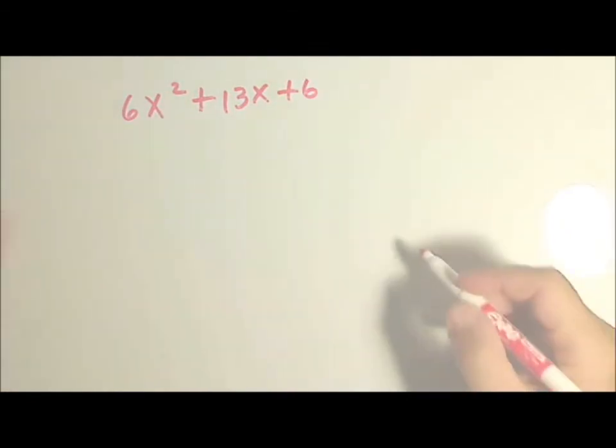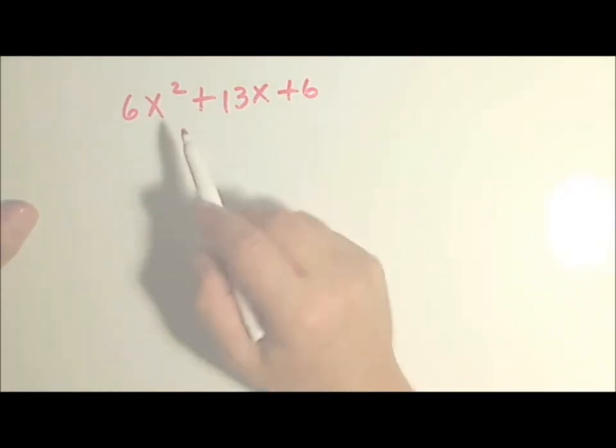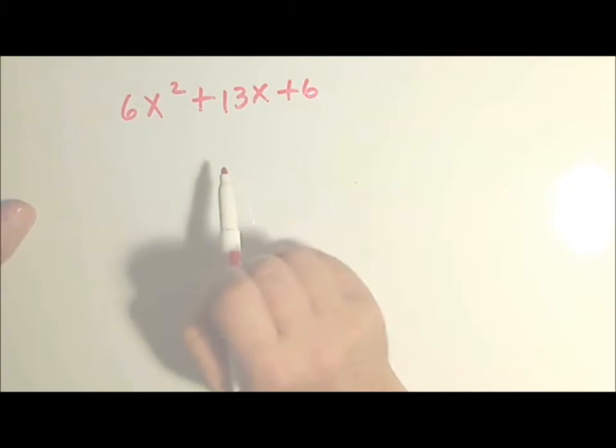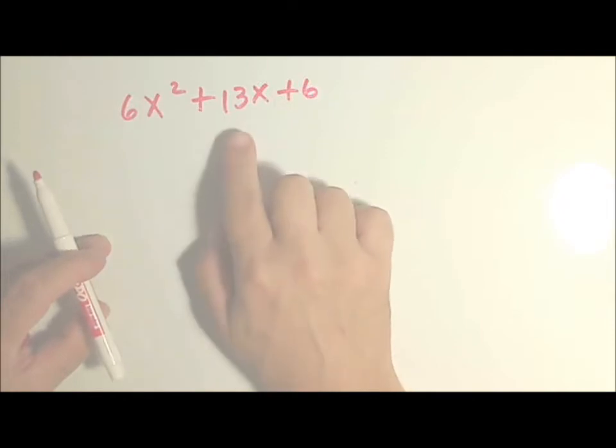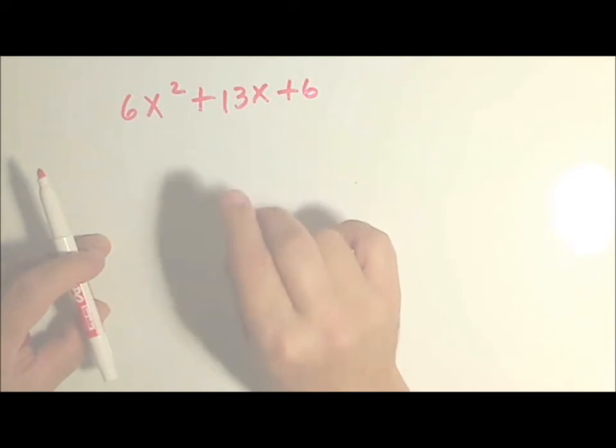So here's what we do. Factoring by grouping. There are three parts to the trinomial. If we can break this into four parts, it's much easier to factor. And what we're going to do is break the 13x into two parts, but we have to do it in a specific way.